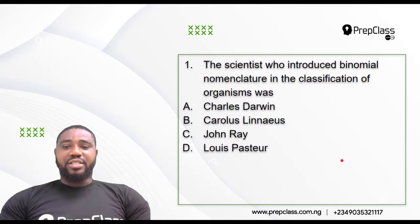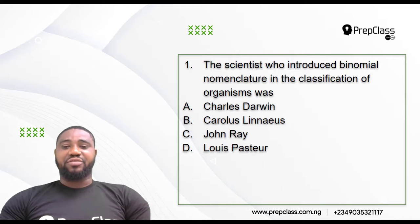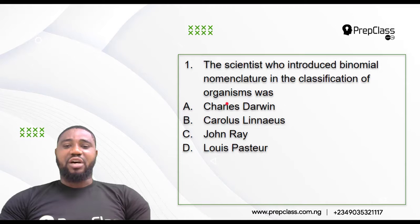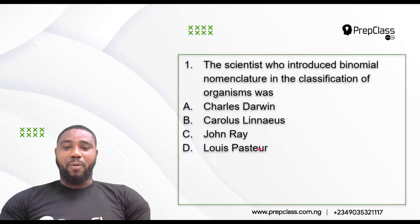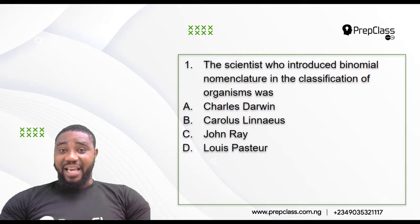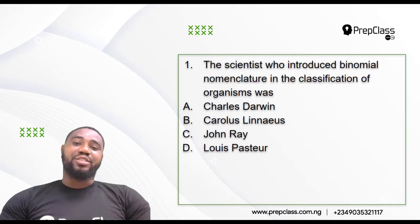Question one says: the scientist who introduced binomial nomenclature in the classification of organisms was — is it Charles Darwin? Is it Carlos Linnaeus? Is it John Ray? Is it Louis Pasteur? So they are asking which scientist introduced binomial nomenclature. Binomial nomenclature simply means the way in which living organisms are named according to their scientific names, like rice — Oryza sativa.